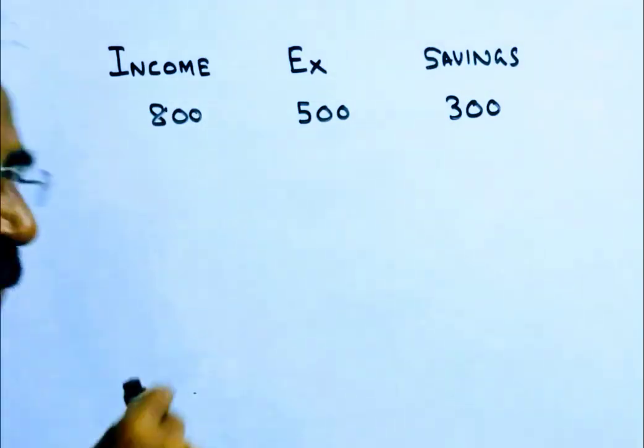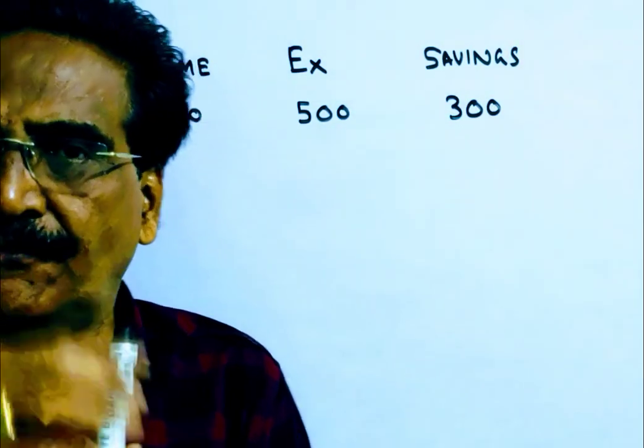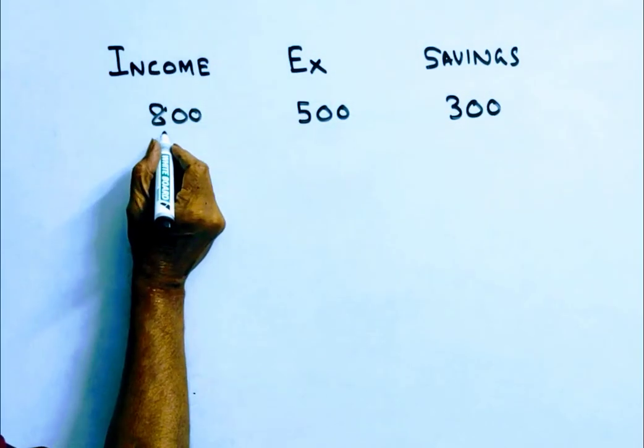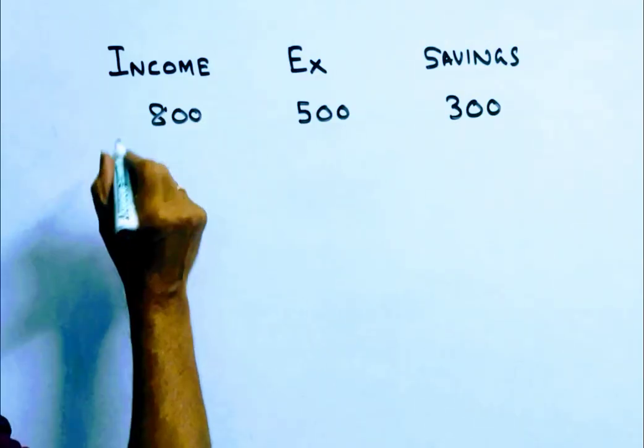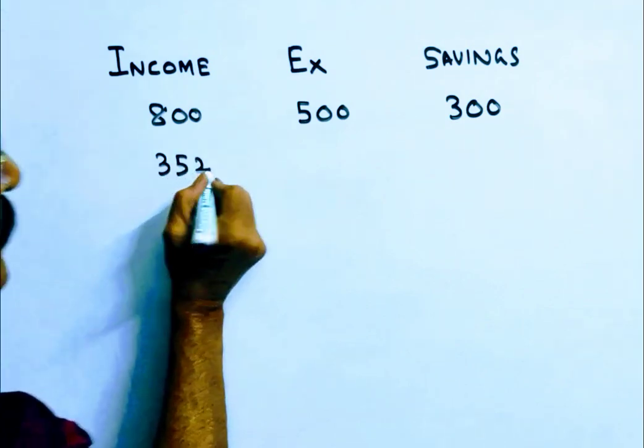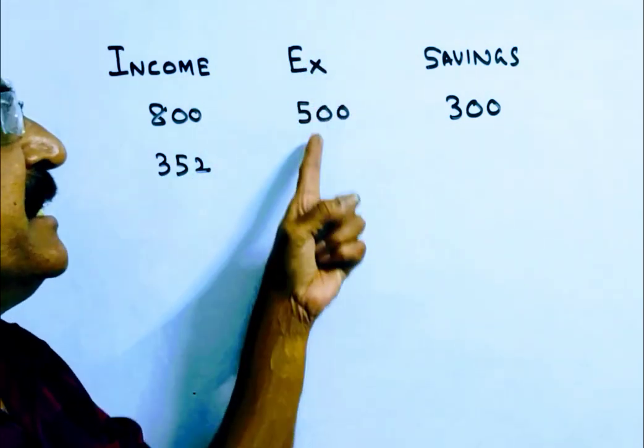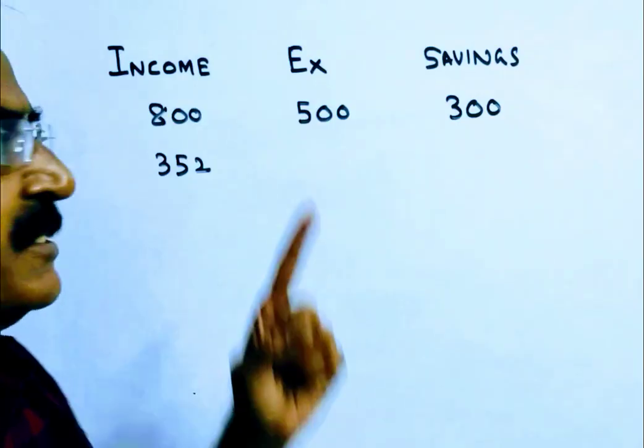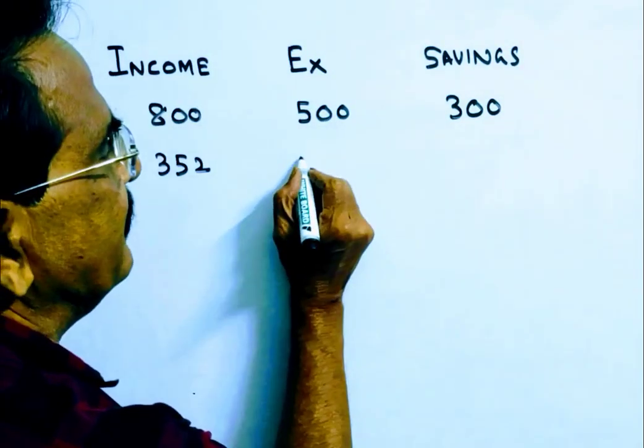Friends, now his income is increased by 44 percent. 44 percent of 800, that is 8 times 44, is 352. And his expenditure is increased by 60 percent. 60 percent of 500 is 300.